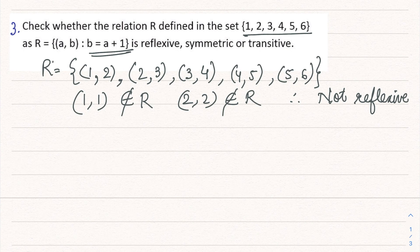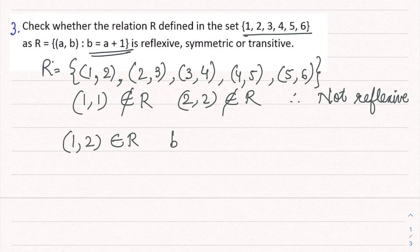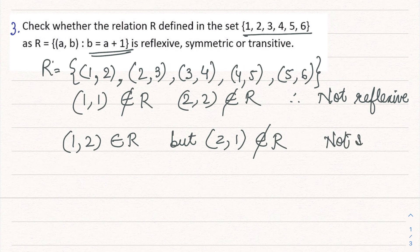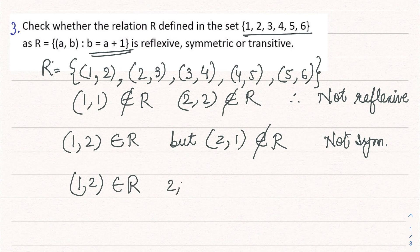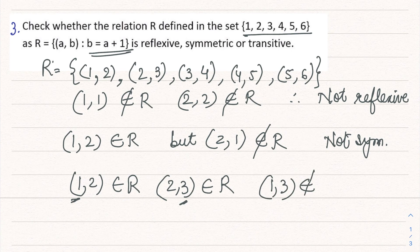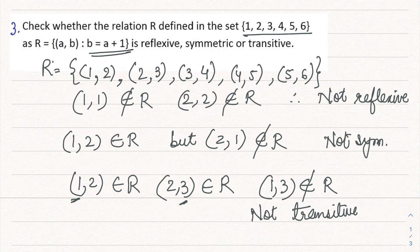For reflexive, (a, a) must be part of the relation — but none are present. Now checking symmetric: (1, 2) belongs to R, but (2, 1) does not belong to R, therefore it is not symmetric. Checking transitive: (1, 2) is in R, (2, 3) is also in R, but (1, 3) does not belong to R. Therefore it is not transitive. This relation is not reflexive, not symmetric, and not transitive.